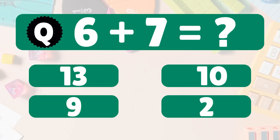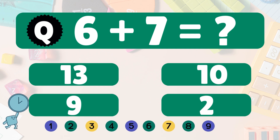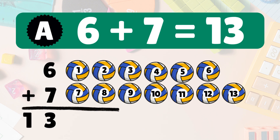6 plus 7 equals? 6 plus 7 equals 13. Let's count. 1, 2, 3, 4, 5, 6, 7, 8, 9, 10, 11, 12, 13. 6 plus 7 equals 13. Well done.